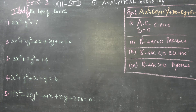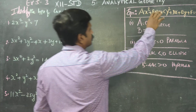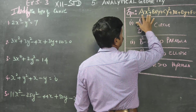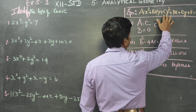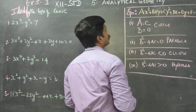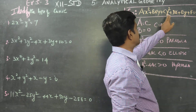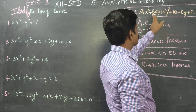Dear students, in exercise number 5.3, we are going to identify the type of conic — whether it is a circle, parabola, ellipse, or hyperbola. Let us consider a general equation in second degree: ax squared plus bxy plus cy squared plus dx plus ey plus f equals 0. The coefficient of x squared is a, the coefficient of y squared is c, and the coefficient of xy is b.